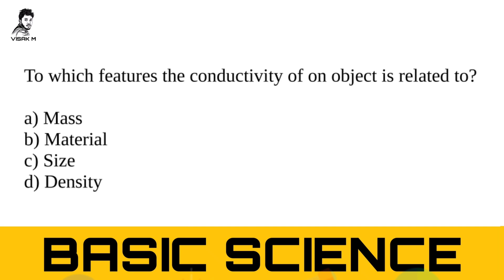First question: to which feature is the conductivity of an object related? You know what conductivity of an object is. The options are: A) mass, B) material, C) size, D) density. The correct answer is absolutely B — material. The conductivity of an object is related to its material.